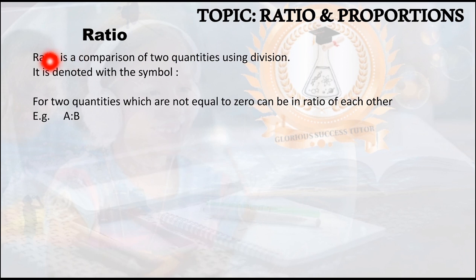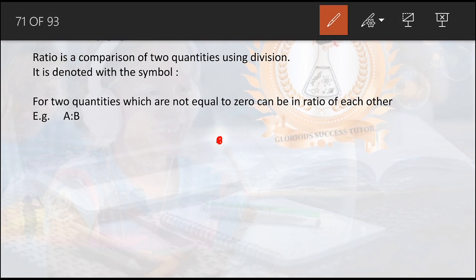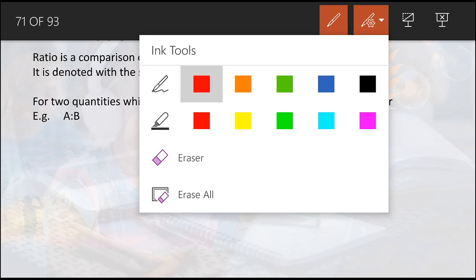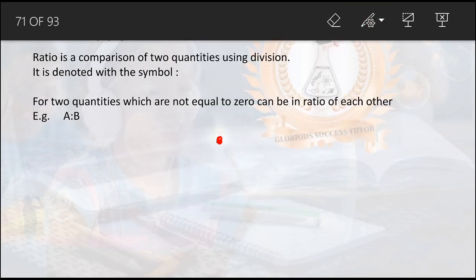We denote the ratio symbol with two dots, just like a colon. Let me draw it out clearly so you can see it. Good — those two dots like this, just like a colon. That is what we call the ratio symbol.